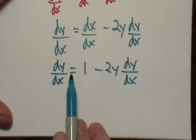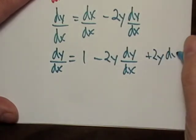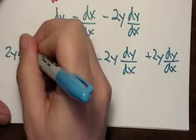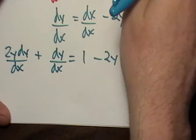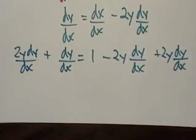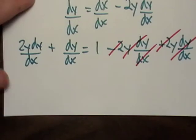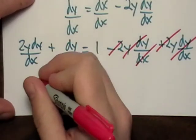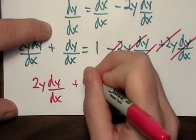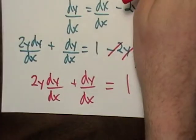Okay, now it looks like I got dy/dx on both sides. So if I add 2y dy/dx to both sides, I'm going to notice that these guys will cancel out. So this will cancel out. And then I'm left with this right here.